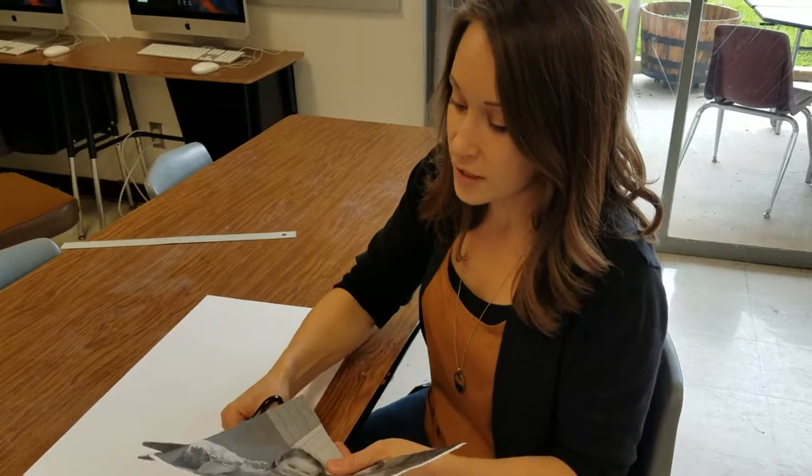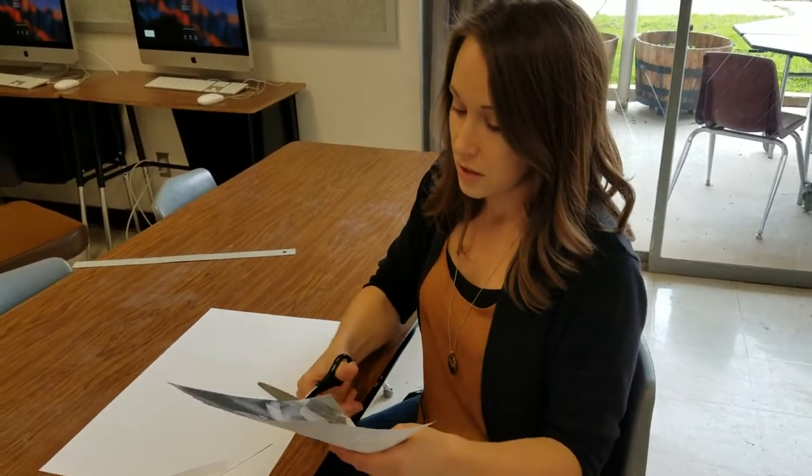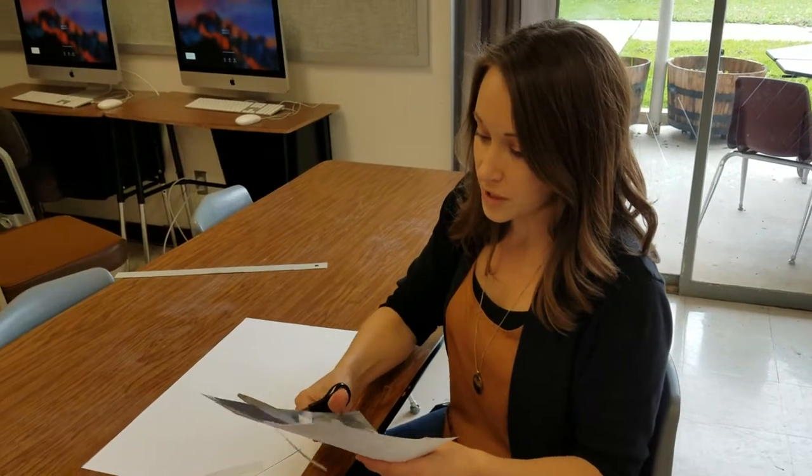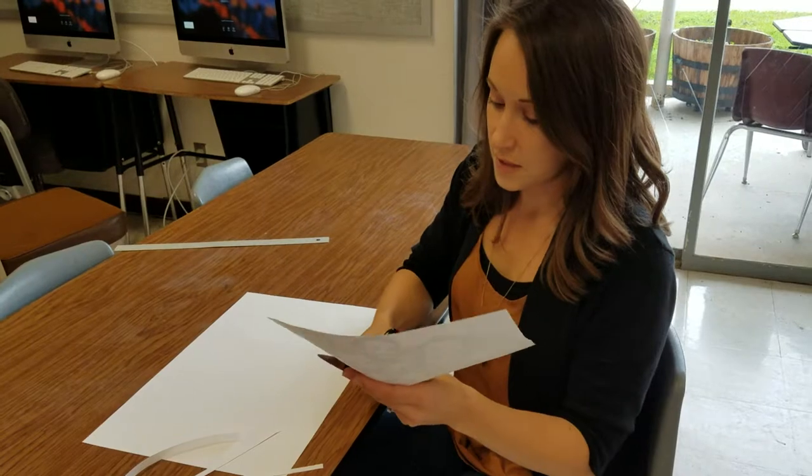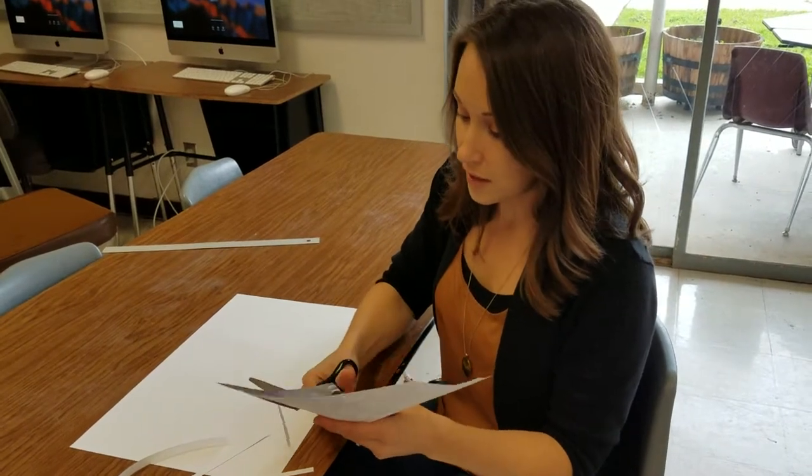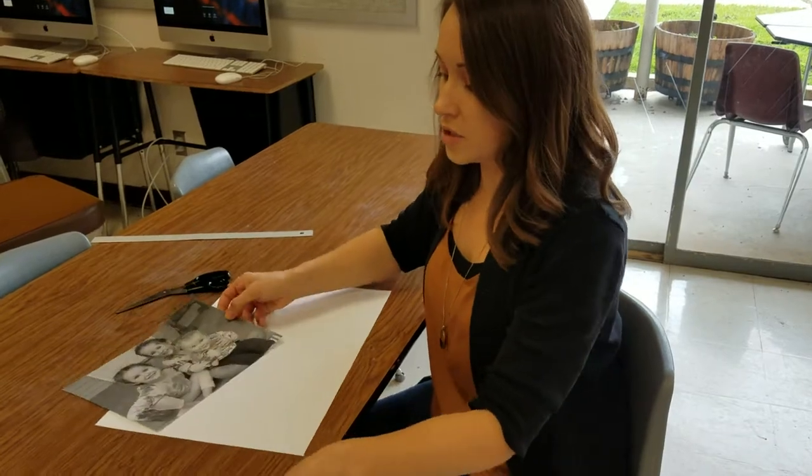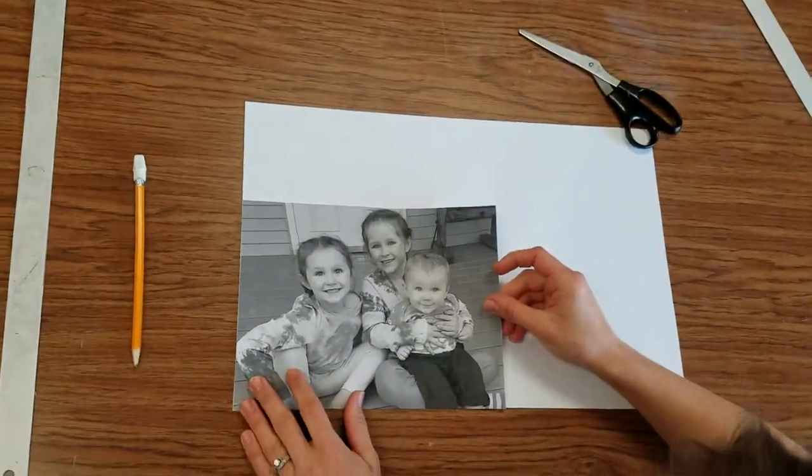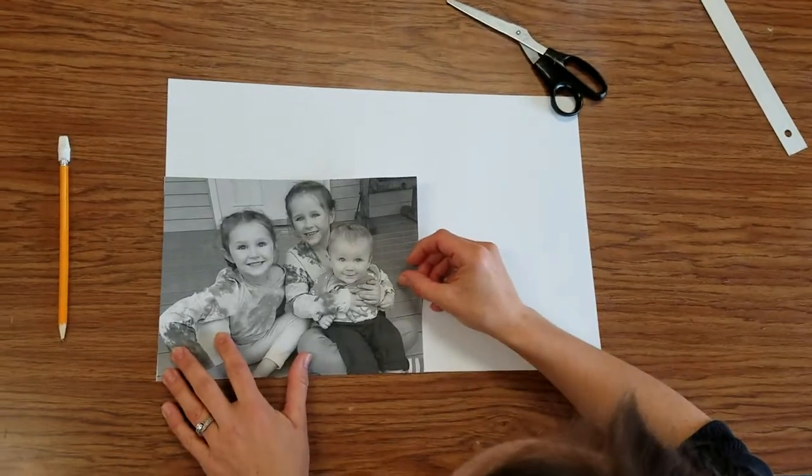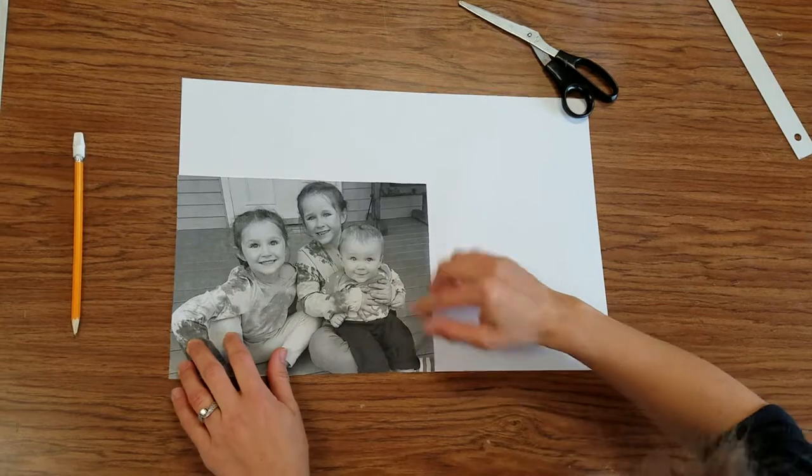With a diagonal grid you don't have to do any measuring. You don't have to use ratios. You use the actual picture to determine the size of the grid. So now that my margins are cut off, the first step is to set your picture in the bottom left hand corner of your drawing paper and you want to line the corners and edges up as much as possible.